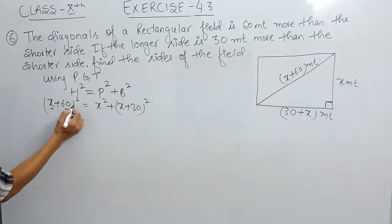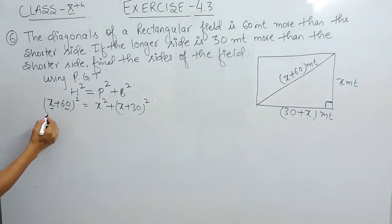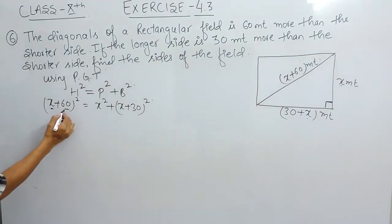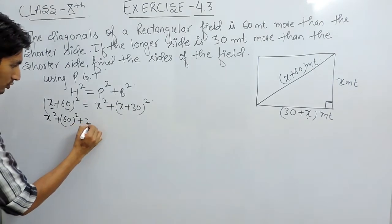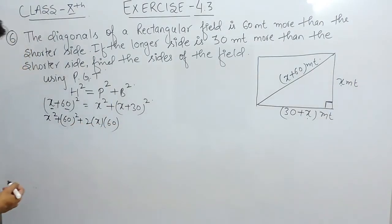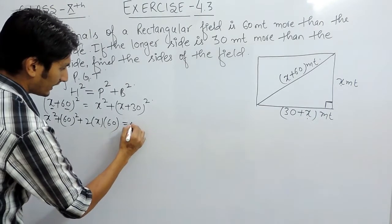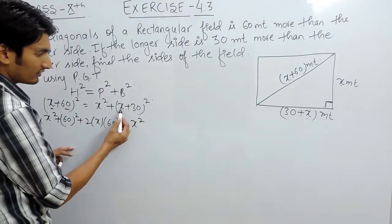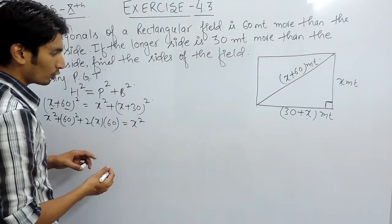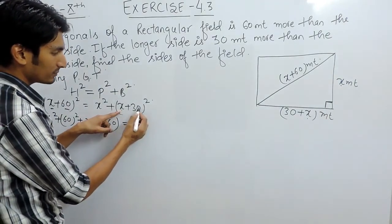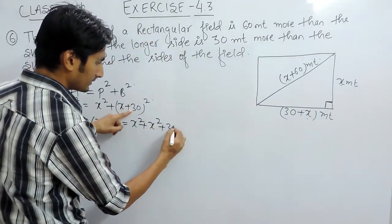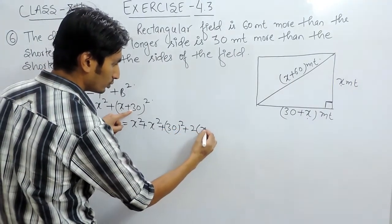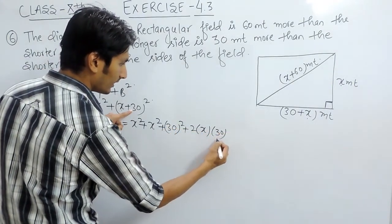This is an a plus b whole square form. When we open it, we use the formula: a plus b whole square equals a squared plus b squared plus 2 times a times b. Similarly on the right hand side, x squared remains, and x plus 30 whole square is again an a plus b whole square, giving a squared plus b squared plus 2 times a times b, where b is 30.